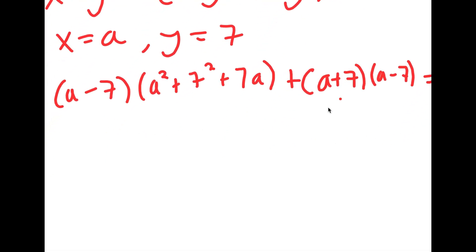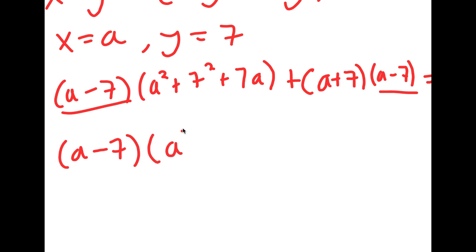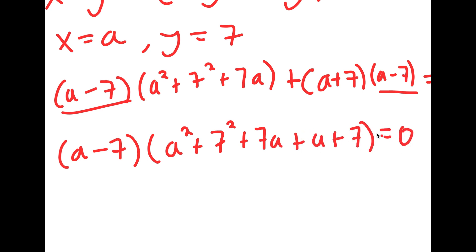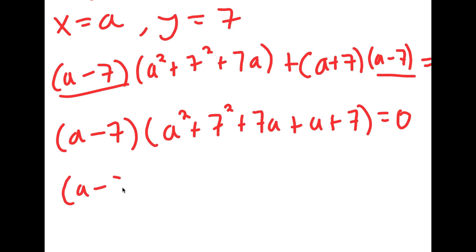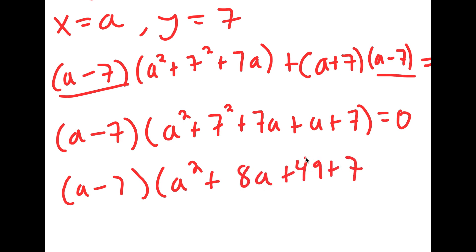Notice how both of these terms have a common factor of a minus 7. So if I factor out a minus 7, I get a minus 7 times a squared plus 7 squared plus 7a plus a plus 7 is equal to zero. And this simplifies to a minus 7 times a squared plus 8a plus 56 is equal to zero.